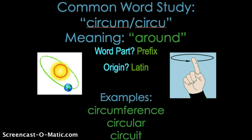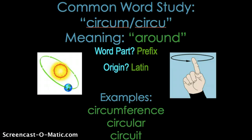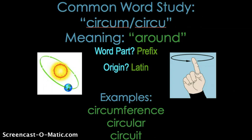The word part is a prefix that comes from the Latin language. As just a few examples, I've put some illustrations there of things — an object that is going around the sun, our earth. Our earth is revolving around the sun; it is in a circular path that's circulating around the sun. And the finger is showing the movement of a circle.